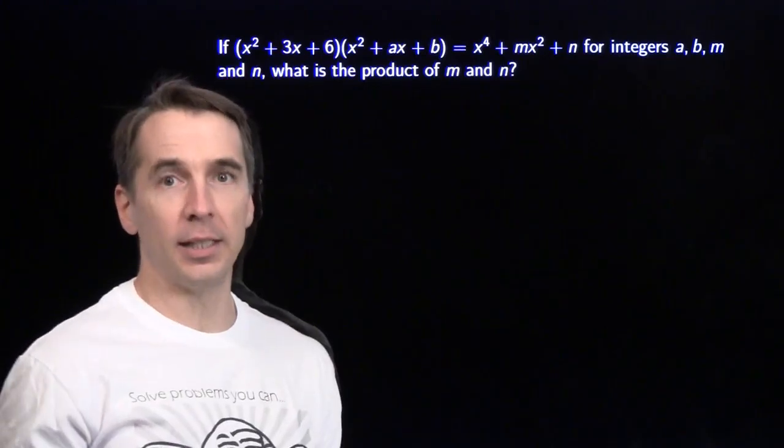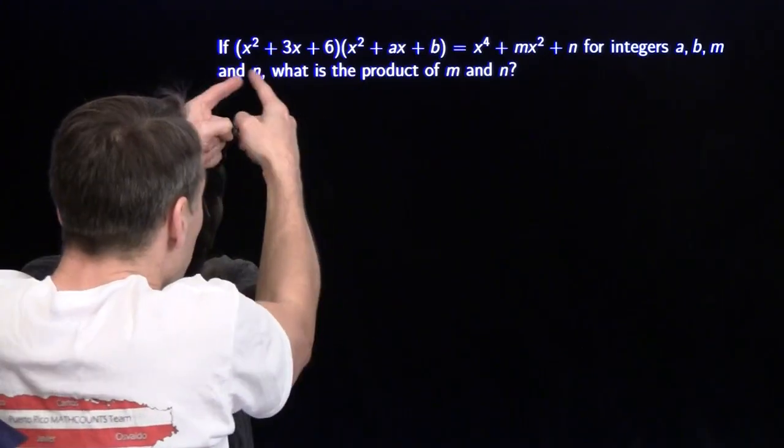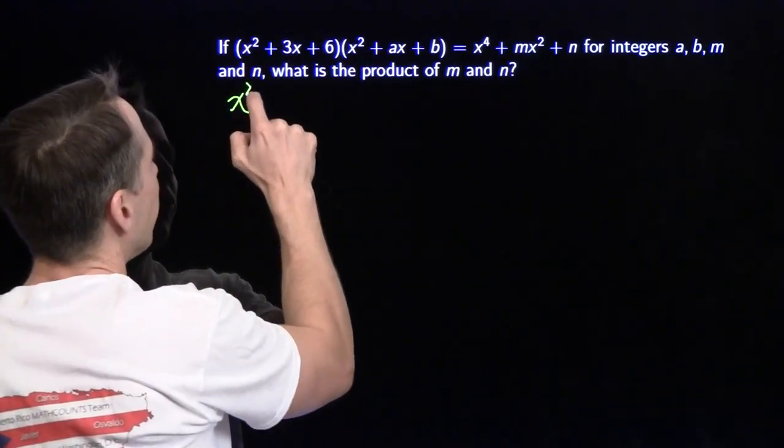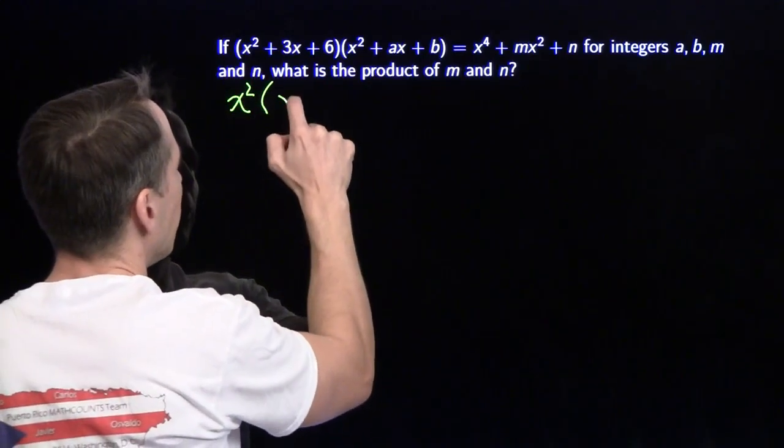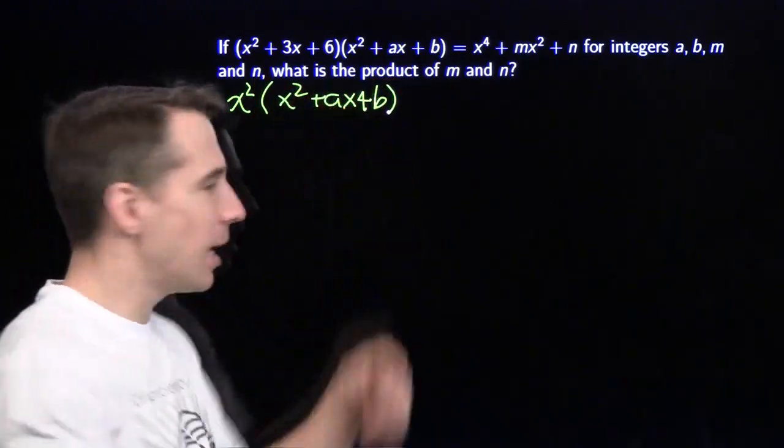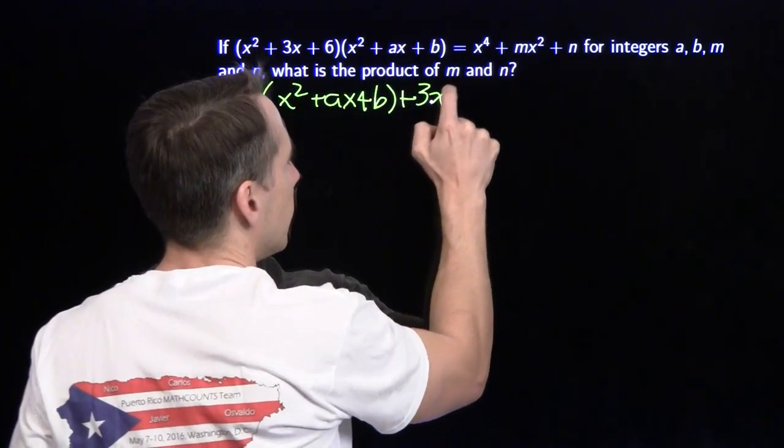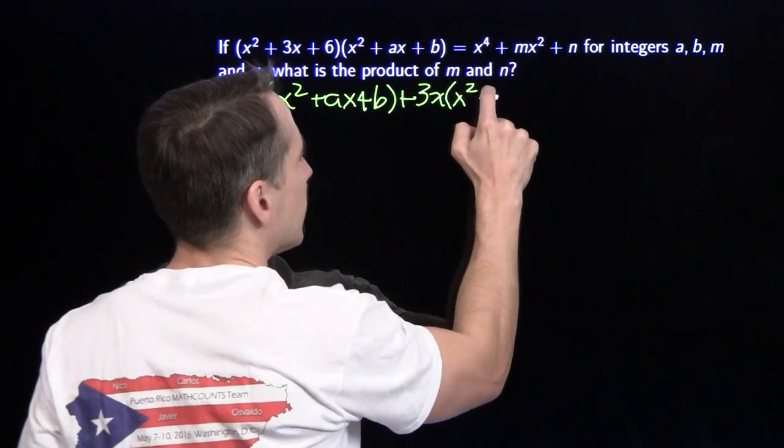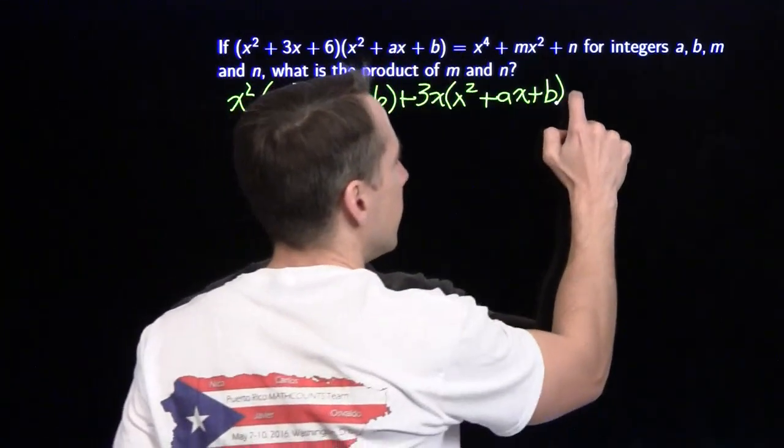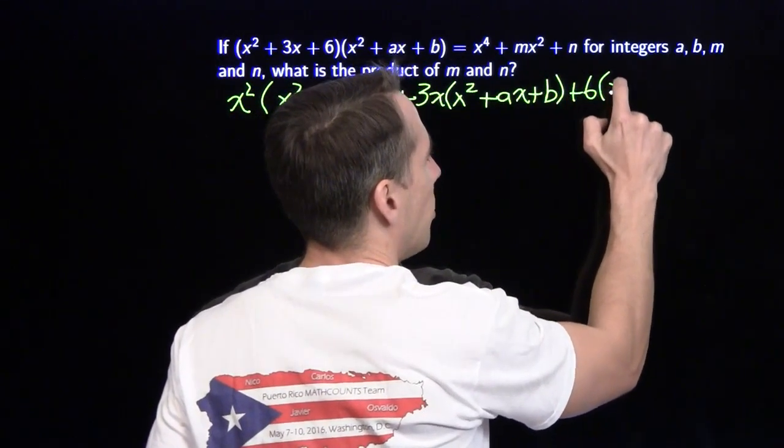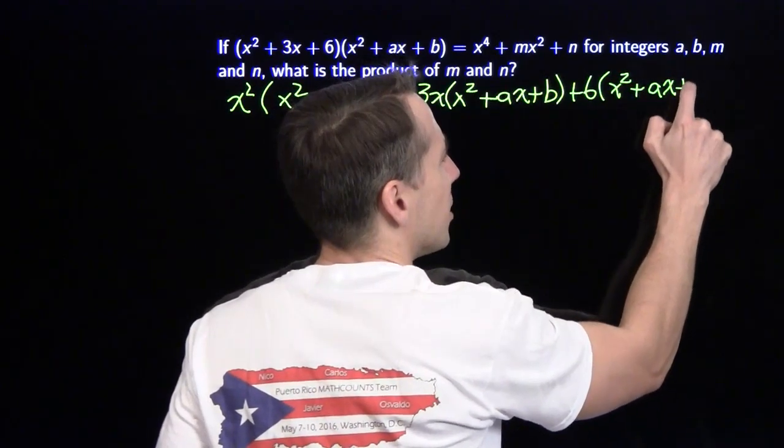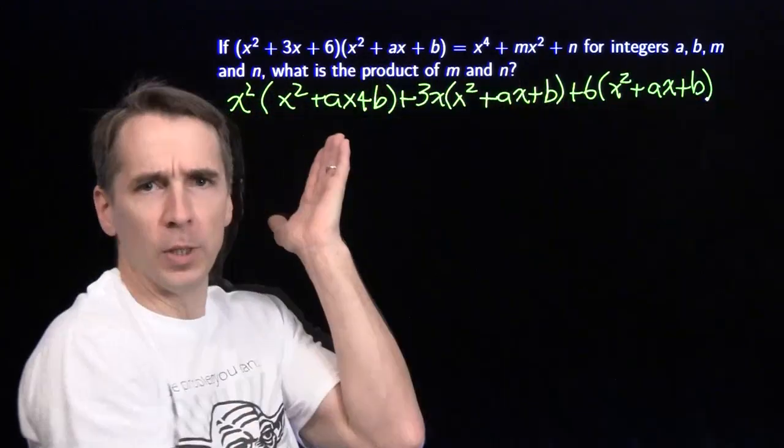So we're going to jump right in here. We know how to handle the left hand side. We're going to use the distributive property. So we're going to break this up and multiply each term here by this quadratic over there. We'll have x² times this whole quadratic, then 3x times that whole quadratic, and at the end, the 6 times that whole quadratic. Now we could keep on going, multiply out each one of these, get a whole mess of terms. Let's stop and take a look.